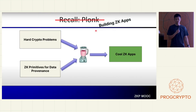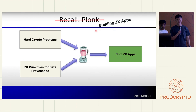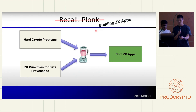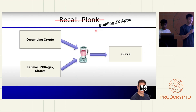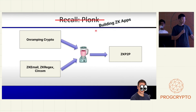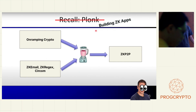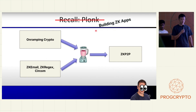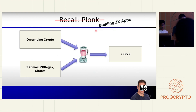Now we've talked about our hard crypto problems and ZK primitives for data provenance — you can just blend them together and create cool ZK apps, and that's exactly what we did. Our hard crypto problem was on-ramping crypto. We used ZK primitives such as ZK email and ZK regex using Circom to build the circuits, and we've created ZK P2P as a result.